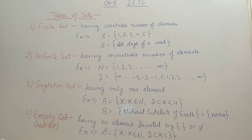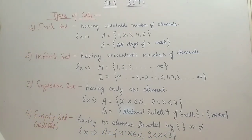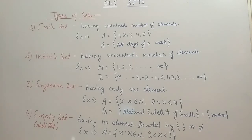The fourth type is the empty set, also called the null set. If a set has no elements — zero elements — we call it an empty set. It is denoted by empty flower brackets {} or by the phi symbol (∅). For example, A = {X | X ∈ N, 2 < X < 3}: there is no natural number greater than 2 and less than 3, so A is an empty set.